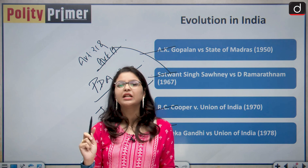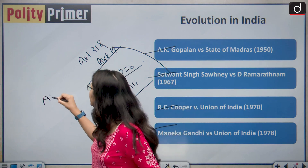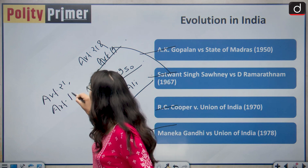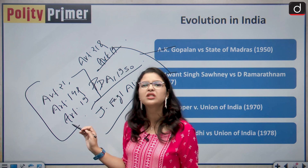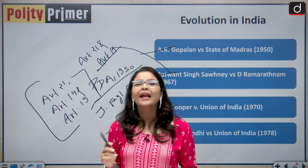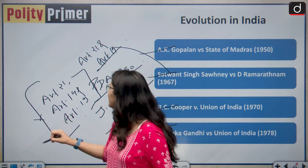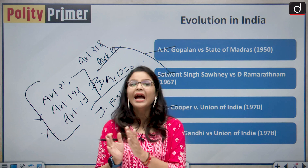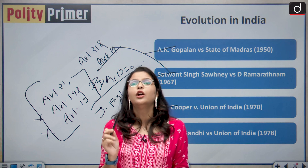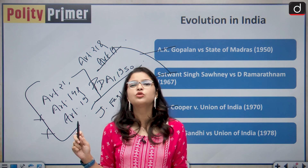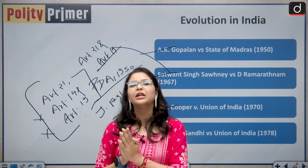The court in Maneka Gandhi specifically held the relationship between Article 21, Article 14, and Article 19 of the Indian Constitution. This interrelationship between these three articles is also known as the golden triangle. The court held that if Article 21 is violated by any procedure that is contrary to Article 14 and Article 19, then that procedure cannot be followed. The procedure must be examined on the touchstone of all three articles.